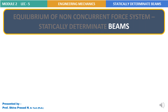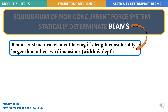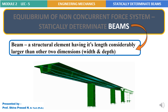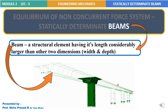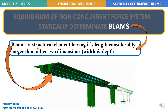Moving on further, let's look into the definition of a beam. A beam is a structural element having its length considerably larger than the other two dimensions, which are width and depth. If you observe in this example, this lengthy member is the beam. It is supported at few points with the help of supports. Compared to the width and depth dimensions, the length of the beam is quite high.